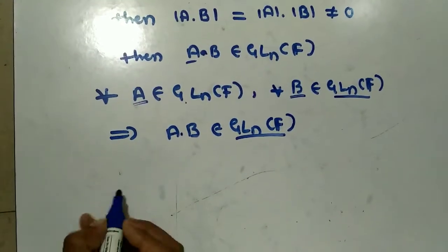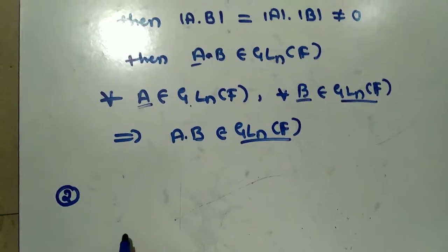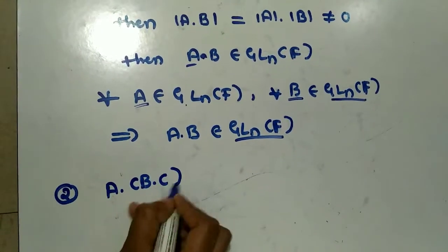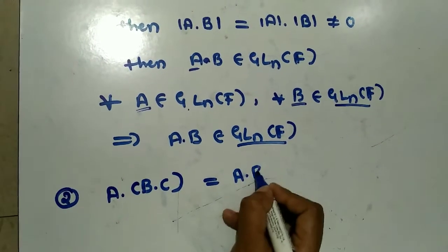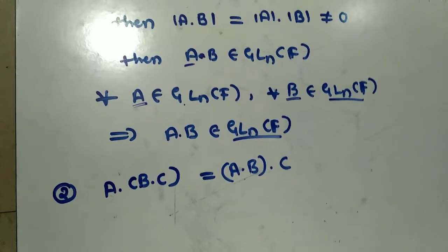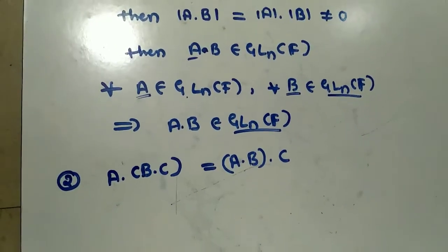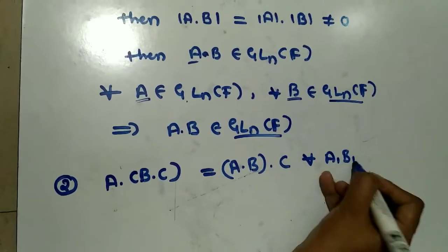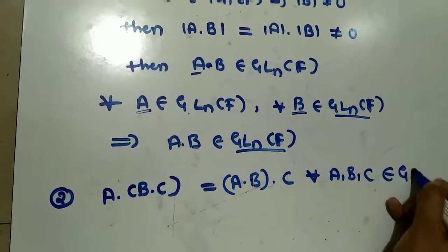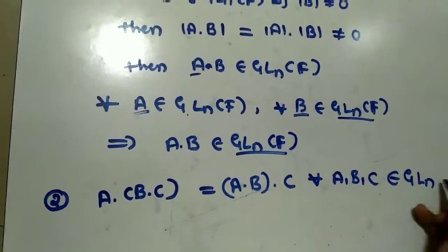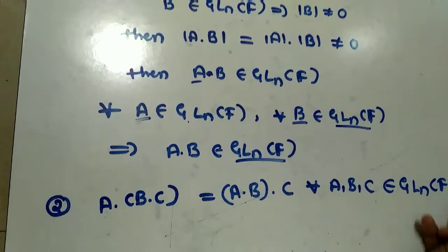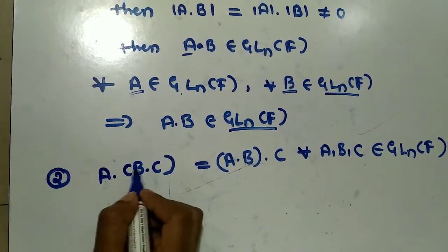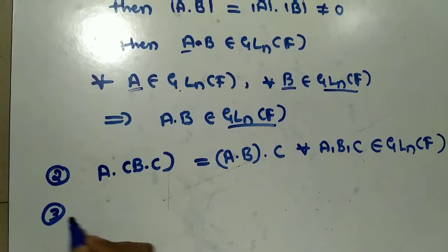Second is associative law: A·(B·C) = (A·B)·C for all A, B, C belonging to GL(N,F). Since matrix multiplication is associative, the associative law is satisfied.